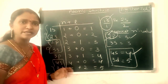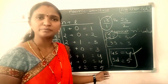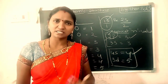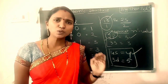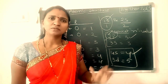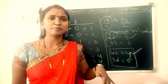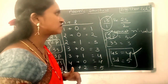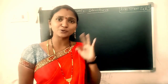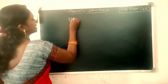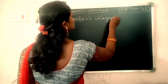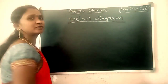There is one more way to determine the energy order of orbitals — by using Moeller's diagram. In Moeller's diagram, the energies of orbitals are shown. The diagram also shows the relative energies and the order of energies starting from the lowest energy.